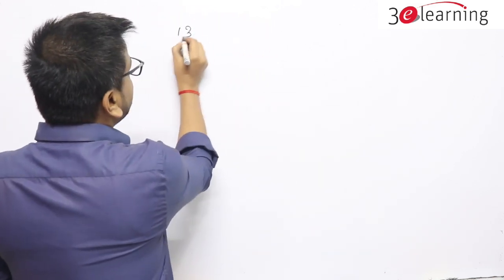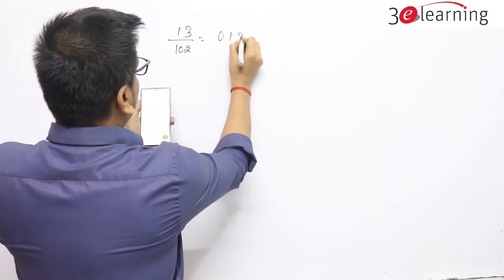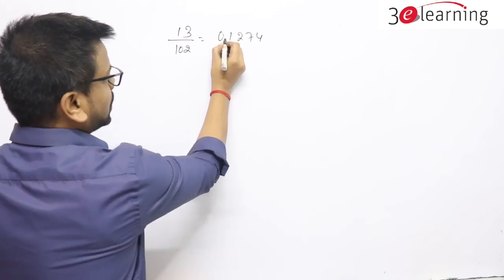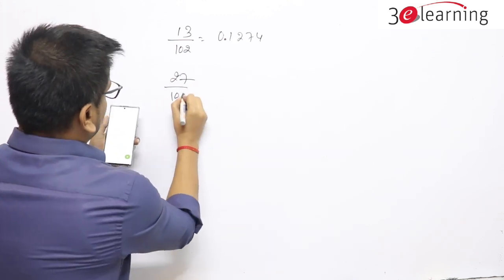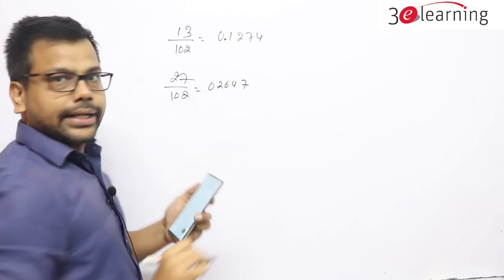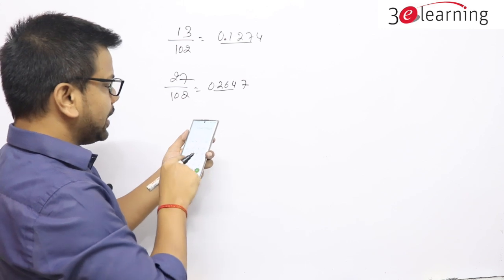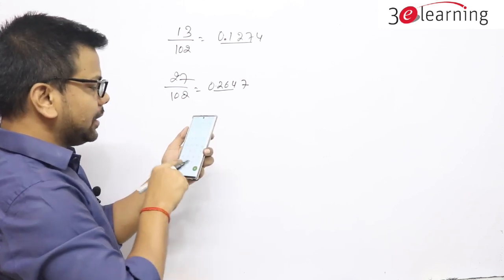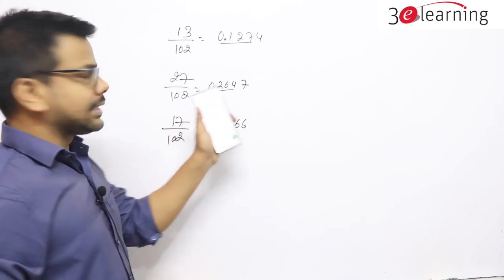We are going to see how to solve any calculation up to 3 digits. You observe — first I'll tell you: if 13 upon 102 is written, I am using the calculator, you observe what is happening — 0.1274. Let's see — observe what is written. I'll take some more random numbers: 27 divided by 102 is nothing but 0.2647. I want you to be able to get it correct up to 3 digits. Let's take another: 17 divided by 102, which is nothing but 0.1666.